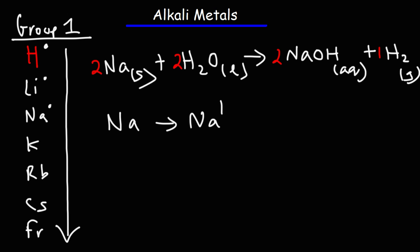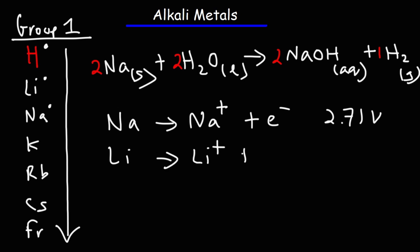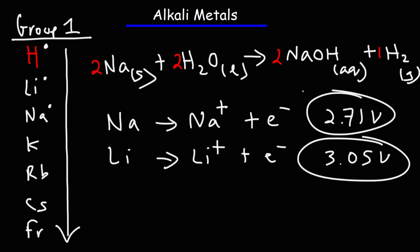The alkali metals are strong reducing agents — they like to give away their electrons to form metal cations. When sodium gives away its electron, it forms a positive metal cation. The standard reduction potential for that reaction is negative 2.71 volts. Lithium is also a strong reducing agent; its standard reduction potential is negative 3.05 volts. Notice that lithium is a stronger reducing agent than sodium — it has a higher potential.